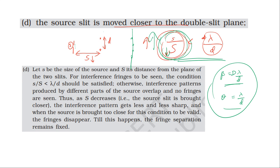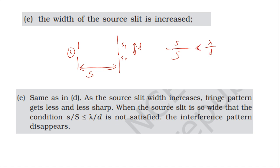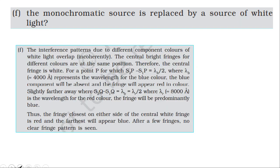Different parts of the source produce interference on the screen. When the width of the source slit is increased, the size S increases. The condition S divided by capital S less than lambda by d becomes harder to satisfy. As S increases, the condition is violated, and the interference patterns from different parts of the source overlap. As a result, the fringes disappear and no clear interference pattern is seen.